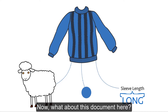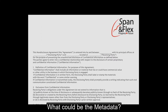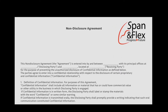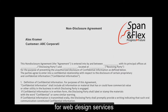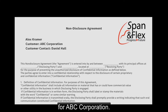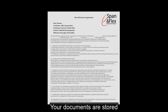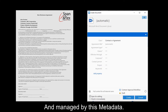Now, what about this document here? What could be the metadata? Well, it's a contract for Web Design Services for ABC Corporation. In mFiles, your documents are stored, organized, and managed by this metadata.